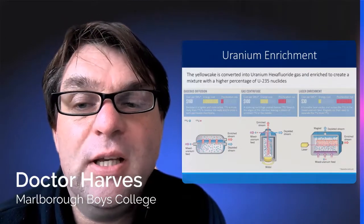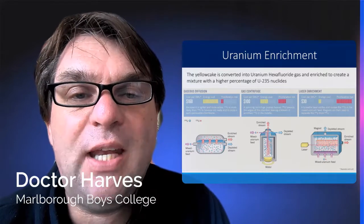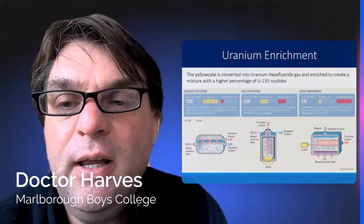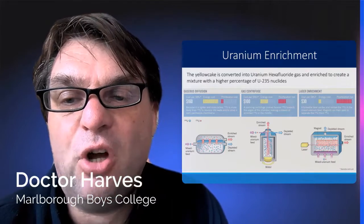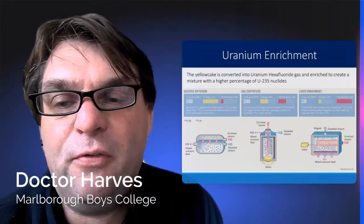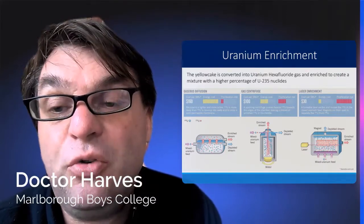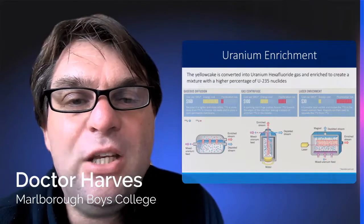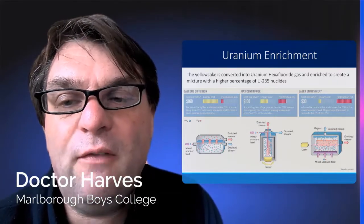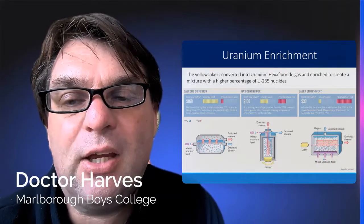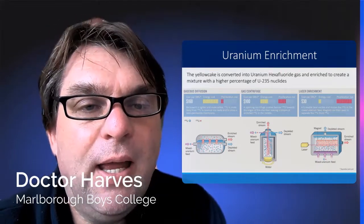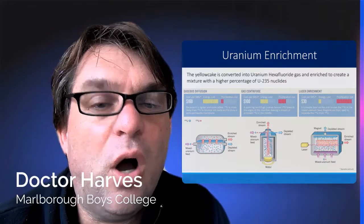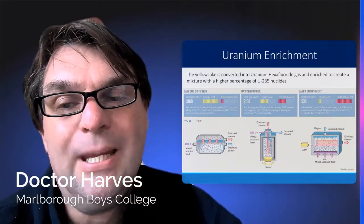The yellow cake is first converted into the gas Uranium hexafluoride, which is then centrifuged — the heavier isotope Uranium-238 comes off first, and Uranium-235 comes off second. This increases the percentage of Uranium-235 in your sample. Laser enrichment is then used to get it to highly enriched Uranium.